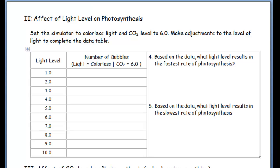Effect of light level. So what you're going to do is you're going to actually set the light to colorless, and the carbon dioxide to six. And you're going to try the light levels from one all the way down to ten, answering these two questions.